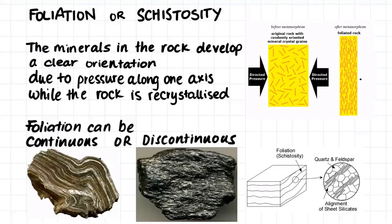Foliation can either be continuous or discontinuous, as we can see in these images here. Here we have continuous foliation, which does not stop, whereas here we can tell that there is a general direction of foliation on the rock, however they are not in continuous lines.